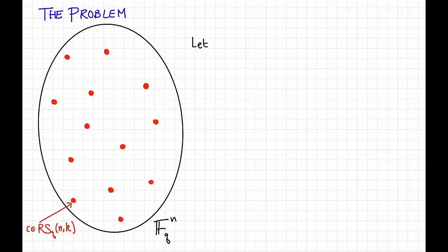So let C be that Reed-Solomon code, so C is the Reed-Solomon code over fq with evaluation points alpha 1 up through alpha n, block length n, and dimension k.